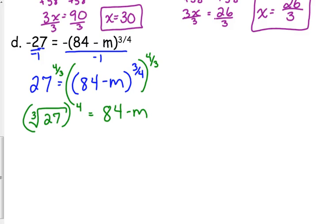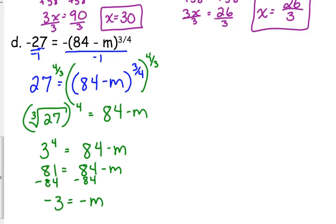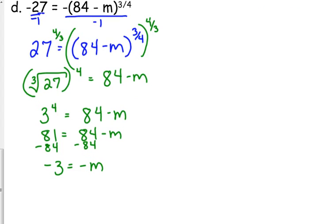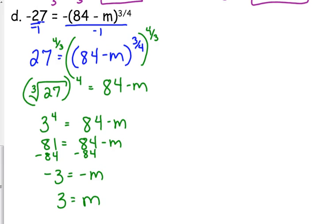That's if you cube positive 3. If you cube negative 3, you get negative 27. So we only have one solution here. And 3 to the 4th is 81. So subtract 84 from both sides. We get negative 3 is equal to, be careful, negative m. So positive 3 is equal to positive m.